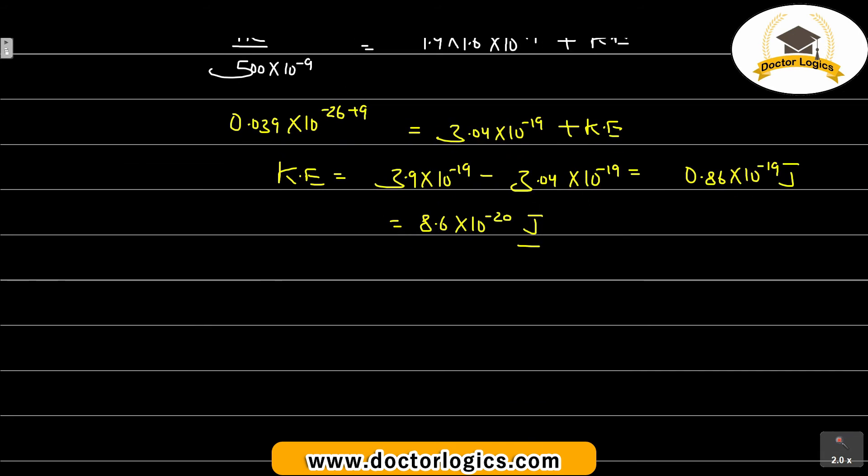Now we find velocity. Velocity is half mv square. Kinetic energy equals half mv square, and m is the mass of electron.